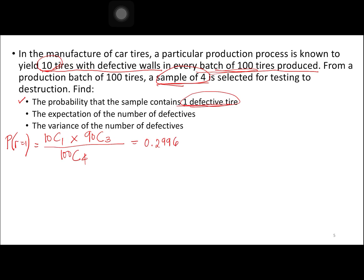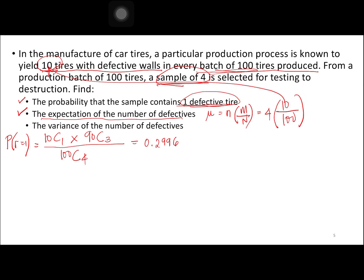Next, we compute the expectation — the expected number of defectives. The mean mu equals n times M over N: n is our sample size 4, M is 10 defective tires, N is 100. So mu equals 4 times 10 divided by 100, which gives us 0.4.